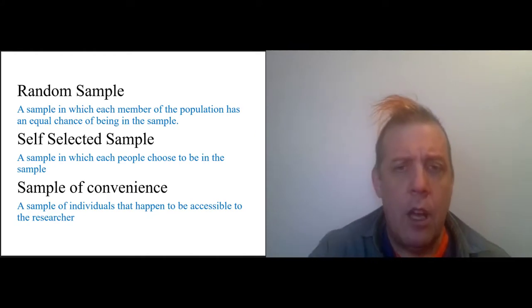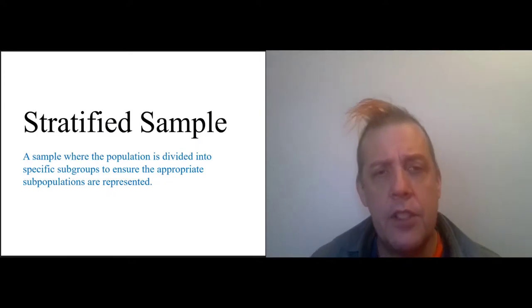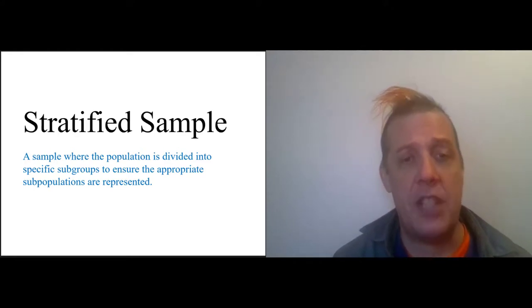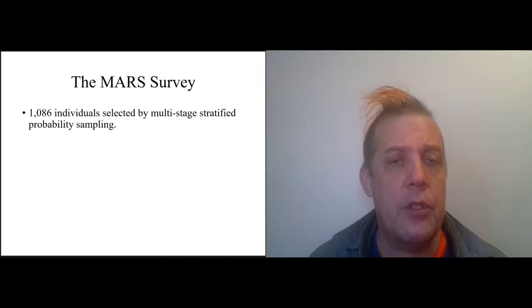What we're looking at here is a stratified sample, and a stratified sample is closer to being a random sample than either of the two previous methods. A stratified sample is a sample where the population is divided into specific subgroups to ensure that appropriate subpopulations are represented. So if you want to be sure that there are an adequate number of African Americans in your sample, you just divide the overall population by race and be sure that you sample a certain number of African Americans.